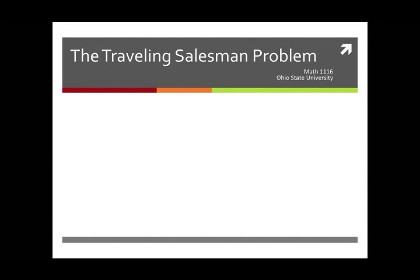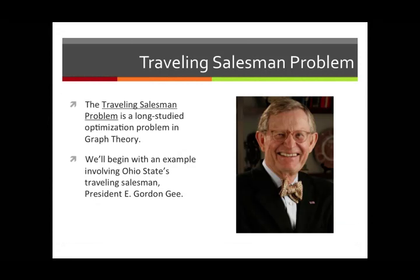This lecture is about the traveling salesman problem, which is a long-studied optimization problem in graph theory. To give you some idea what this is about, I'm going to give you a made-up example. It involves the man who used to be president of Ohio State until very recently, President Gordon Gee, and of course as president of the university he was a big booster and salesman.